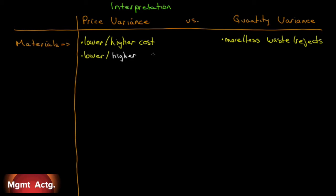We can get a better price by buying a lower quality, achieve a positive price variance, but a lower quality may result in more waste or rejects, and a higher quality may result in less waste or rejects. So there's trade-offs to be made between price and quantity.